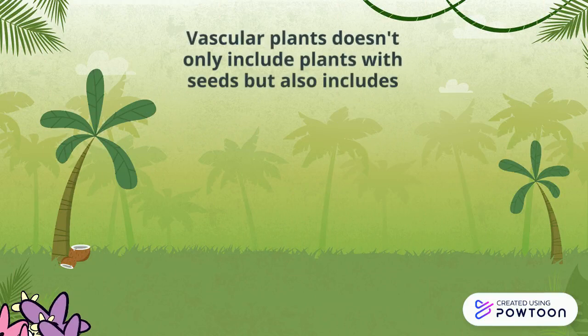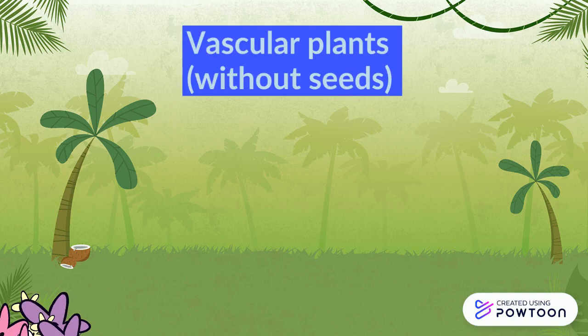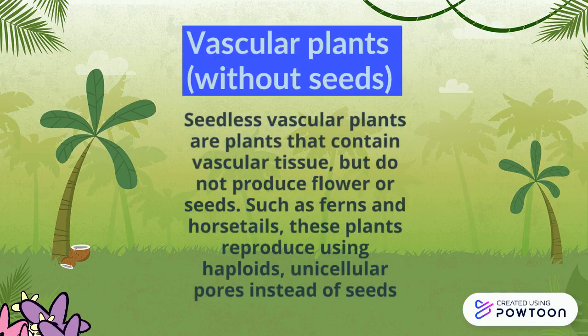Vascular plants doesn't only include plants with seeds, but also includes plants without seeds. Seedless vascular plants are plants that contain vascular tissue but do not produce flower seeds, such as verns and heart-tails. These plants are produced using heploids, unicellular pores instead of seeds.